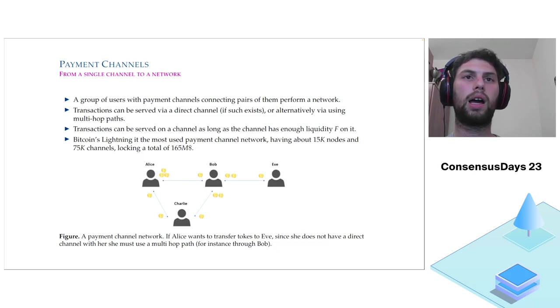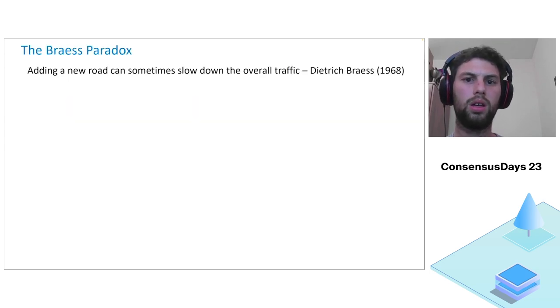For instance, if Alice wants to transfer funds to Eve, although she does not have a direct channel with Eve, she can use the channel that Bob has with Eve and transfer funds to Eve. What's important here is each channel has some liquidity on it, on each direction. That means how much money is still locked on this side of the channel. Transfers are available as long as there is enough liquidity. In our case, in the channel Charlie has with Bob, she has one token, that's her liquidity. So Charlie is limited to transactions of size one at most.